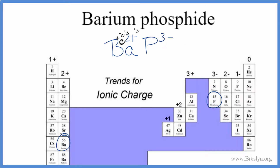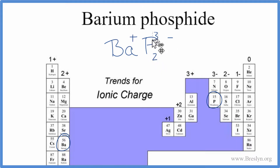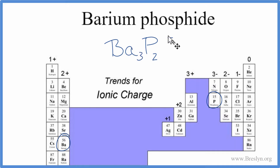Right now we have the charges, but this isn't the correct formula. These charges should add up to 0 — we should have a net charge of 0, because barium phosphide is a neutral compound. We can use a trick called the crisscross method. We take the 2 and put it here, and the 3 and put it there, then get rid of the charges, and that is the formula for barium phosphide: Ba₃P₂.